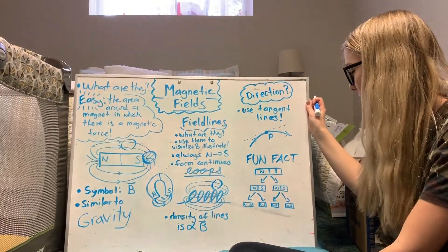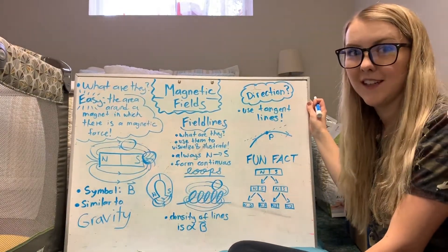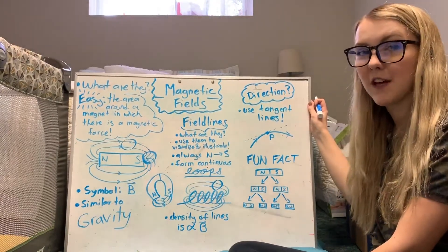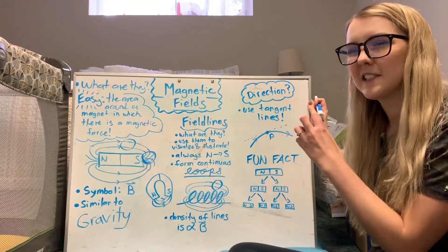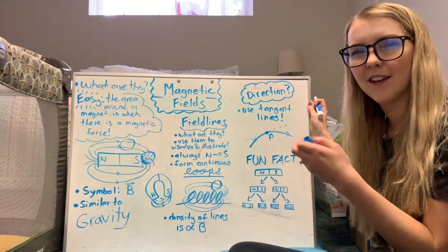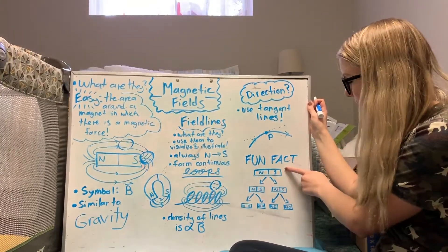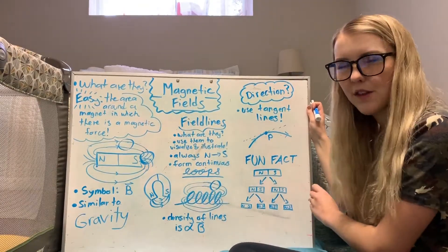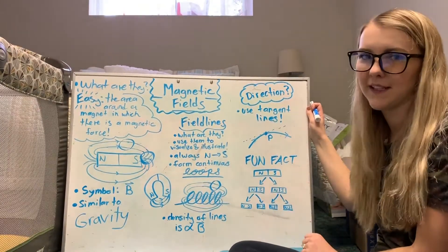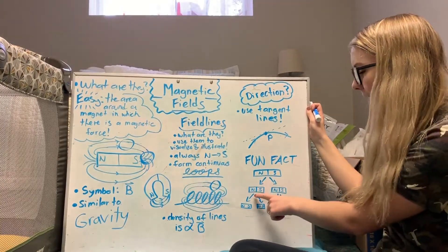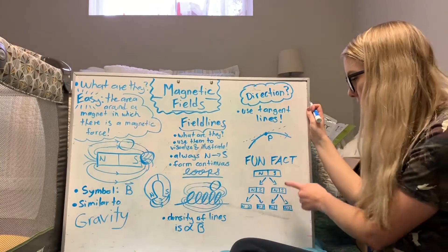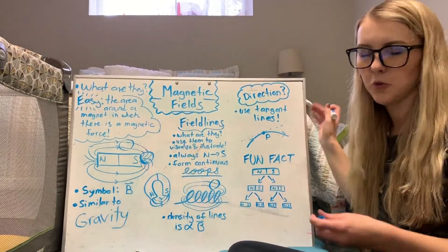And then another fun fact I just want to touch on quickly is that you can't actually split up the north and south poles and so you can't really split a field in half or anything. So if I were to cut this magnet in half it wouldn't separate into north and south, it would actually just split into two smaller magnets, and then once again if you split those two they would split into four and they just keep going and each of those magnets will have their own individual magnetic field.